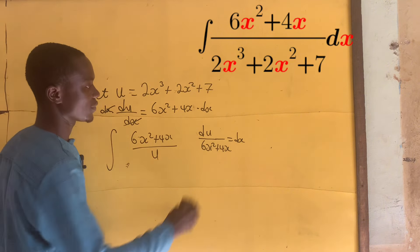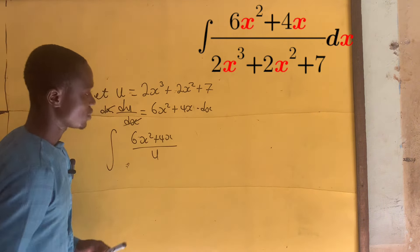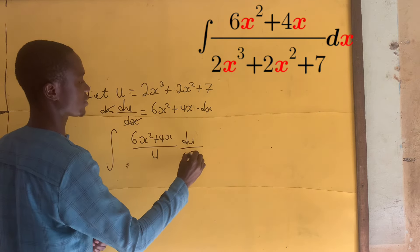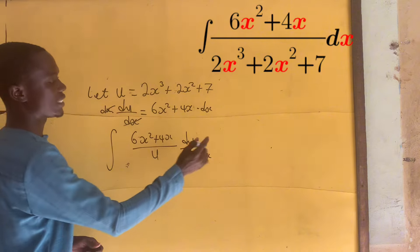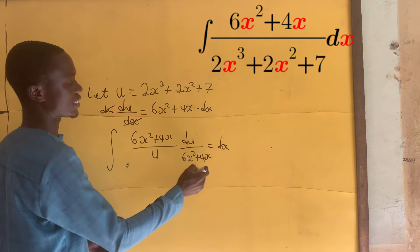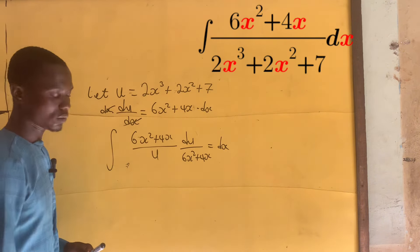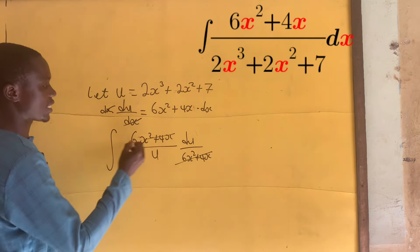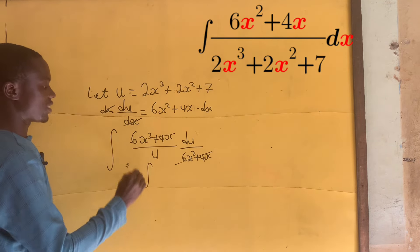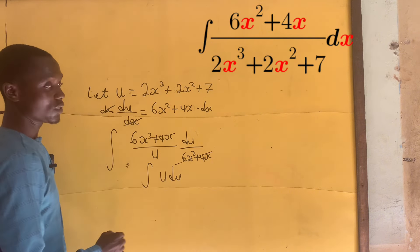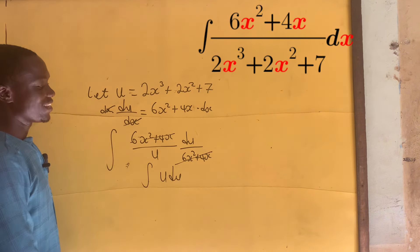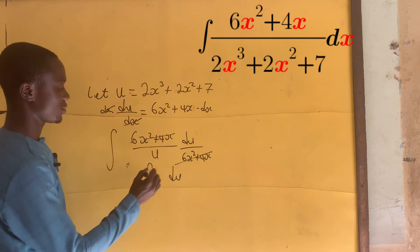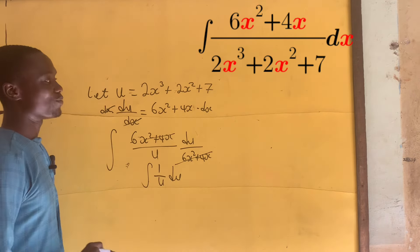So we replace dx with du divided by 6x squared plus 4x. You can see that this will cancel with the numerator, leaving us the integral of 1 over u — and that is 1 on u in a very simple way.